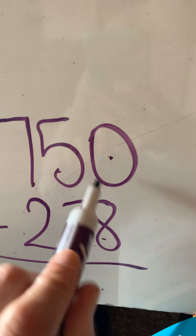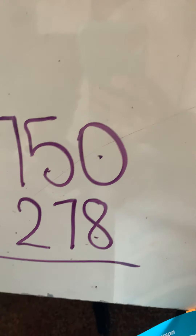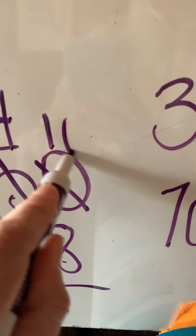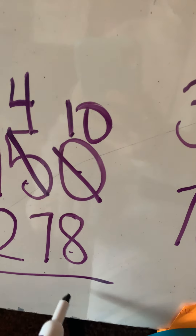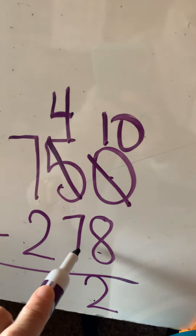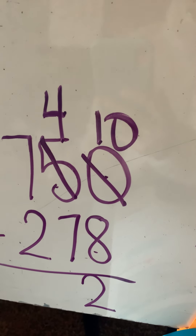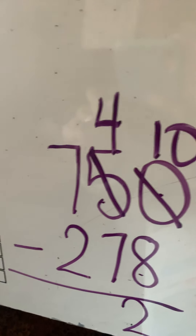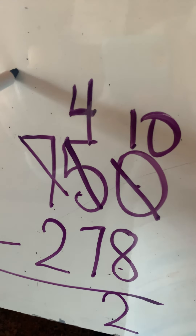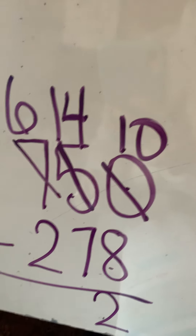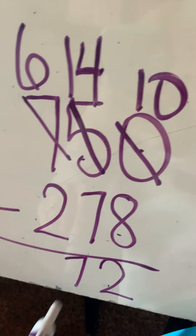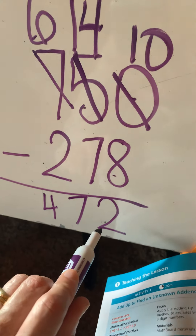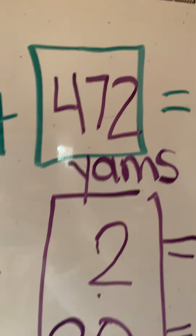Can you take 8 from 0? No, you can't because 8 is bigger. So go next door — take away a 10, add 10 ones. 10 minus 8 is 2. Can you take 7 away from 4? No, you can't. So what do you do? You go next door — knock knock — take 100 away, add 10 tens. 14 minus 7 is 7, and 6 minus 2 is 4. Look at that: 472, just like we got right there. So either way, you can solve those problems.